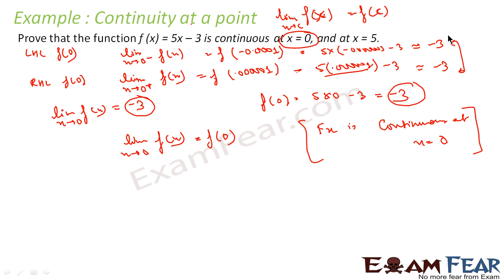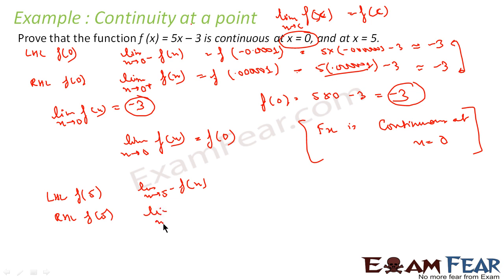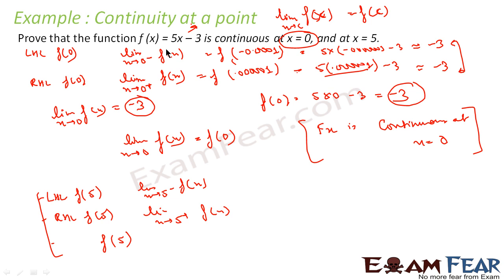Similarly, we can check x = 5. First find the left-hand limit: limit as x tends to 5⁻ of f(x), then the right-hand limit: limit as x tends to 5⁺ of f(x). If they are equal, the limit exists; then find f(5) and check if all values are equal. The answer will be yes — the function is continuous at x = 5 as well, because f(x) = 5x − 3 is a linear equation in x and such equations are generally continuous.